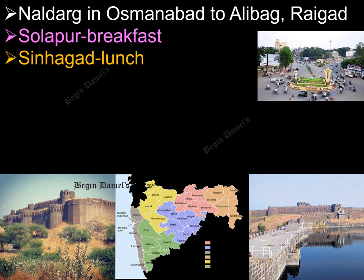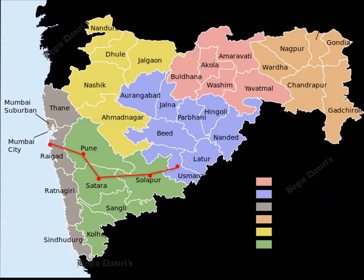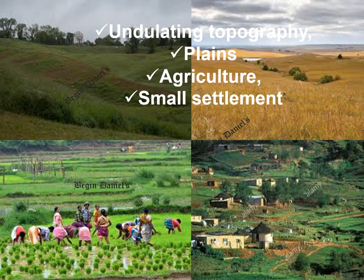Now let's look at the textbook example. Students travel from Naldurk in Usmanabad to Alibak in Raigad district. They planned to have breakfast in Swalapur and lunch in Senagar. The route map shows the journey from Naldurk in the east to Alibak on the coastal side in the west. They are visiting a seaside destination.